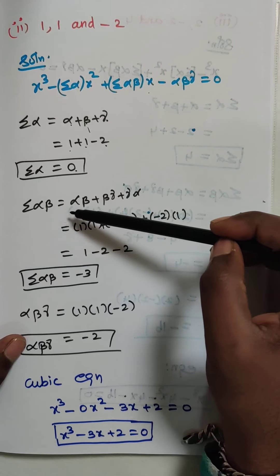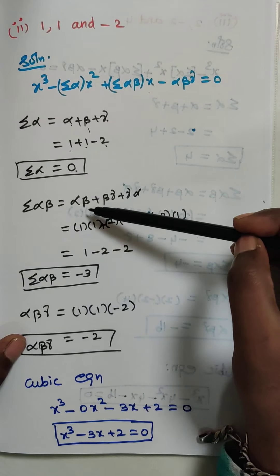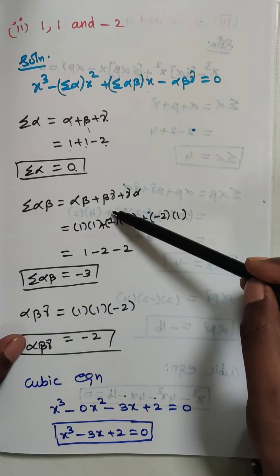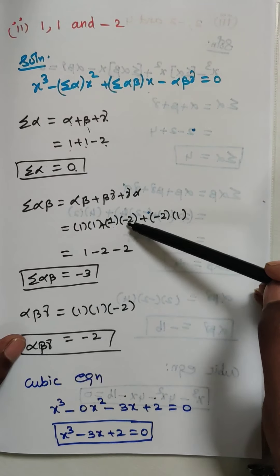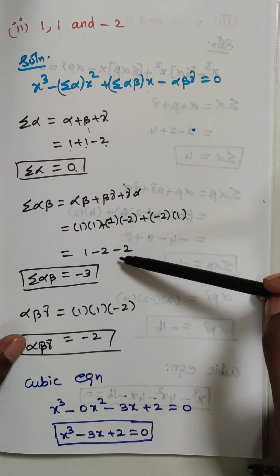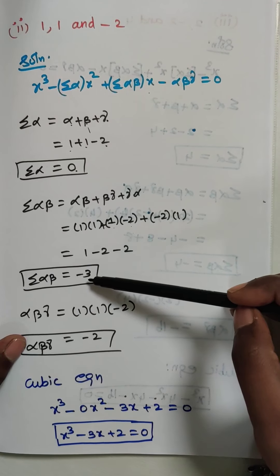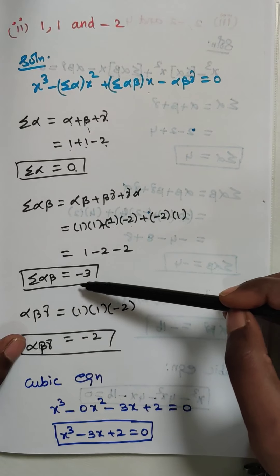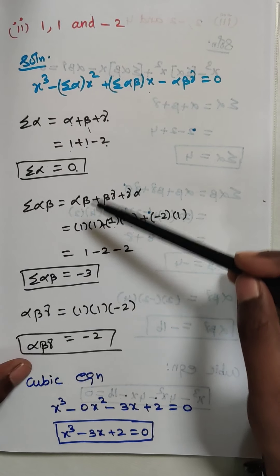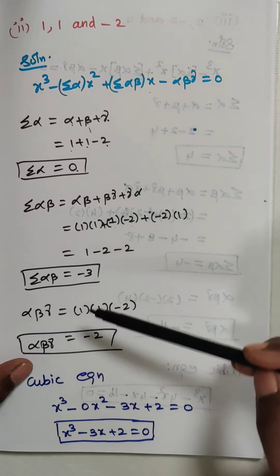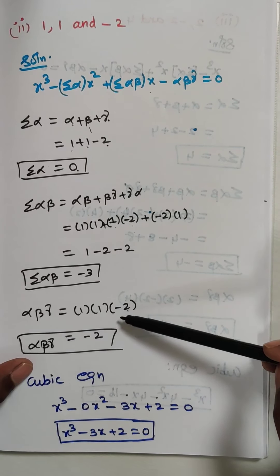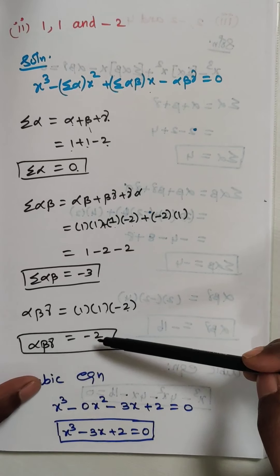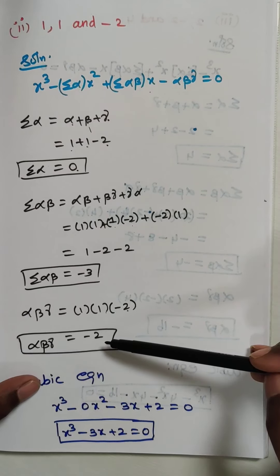Now summation alpha beta = αβ + βγ + γα: 1×1 + 1×(−2) + (−2)×1 = 1 − 2 − 2 = −3. So Σαβ = −3. Next, αβγ = 1×1×(−2) = −2. So αβγ = −2.